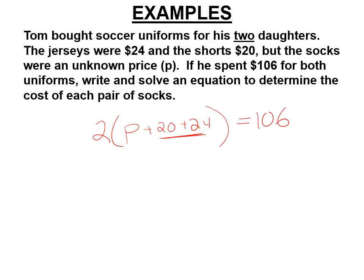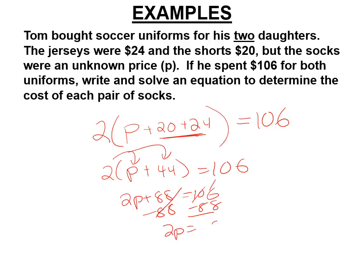Now, you could distribute a property first or combine like terms first, but let's do that. Let's combine our like terms and get 44. Now, let's do the distributive property. 2p plus 88 equals 106. Subtract 88 from both sides. 2p is 18 divided by 2. Each pair of socks cost $9.